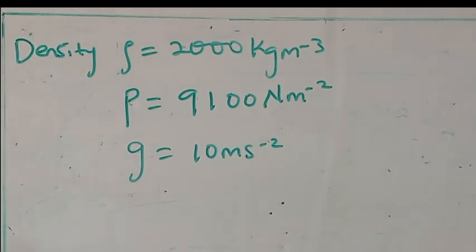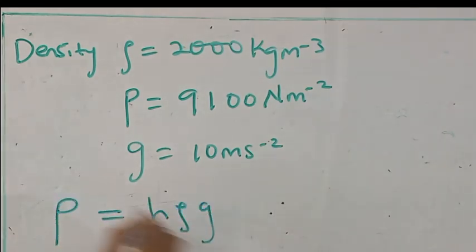Now, which formula are we going to apply to solve this problem? Pressure is equal to H rho g. This formula shows that pressure depends on height and density. Okay, let's put in everything. Remember, we are looking for, the question said we should calculate the depth, that's height.